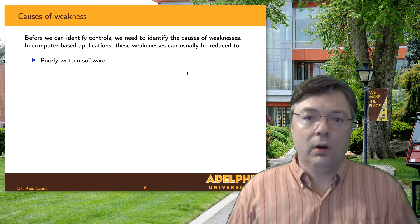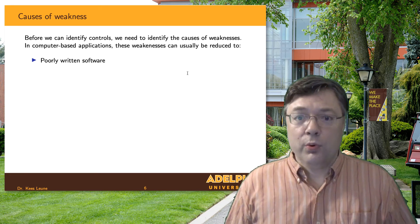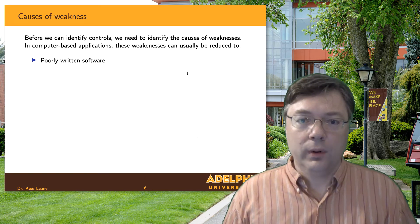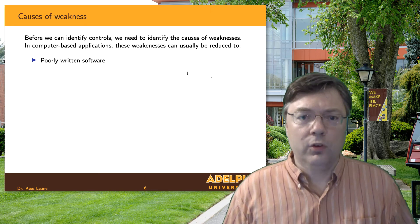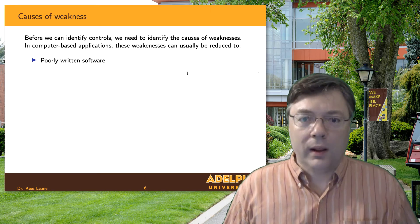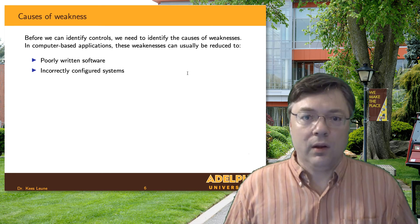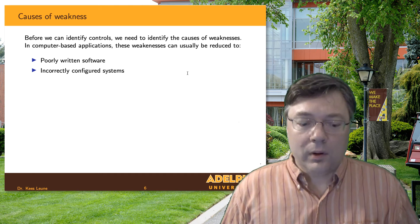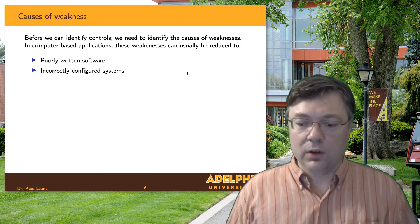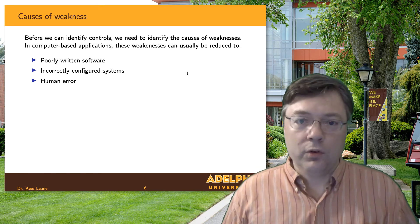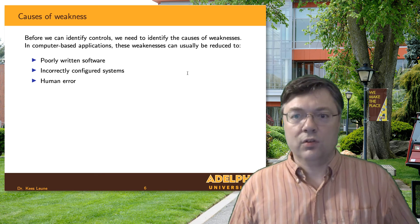Before we can identify what those controls are, we have to figure out the root causes of the issues we need to protect against. In some cases, it's just poorly written software, so we have to make sure that when we write software and queries, we do this correctly. We could also have incorrectly configured systems — it's one thing to configure a database, but if you don't put usernames and passwords on it, it doesn't mean a whole lot. And of course, we want to be able to protect against human error — for example, if someone accidentally types DROP TABLE, there should be some form of safeguard that stops us from losing everything.